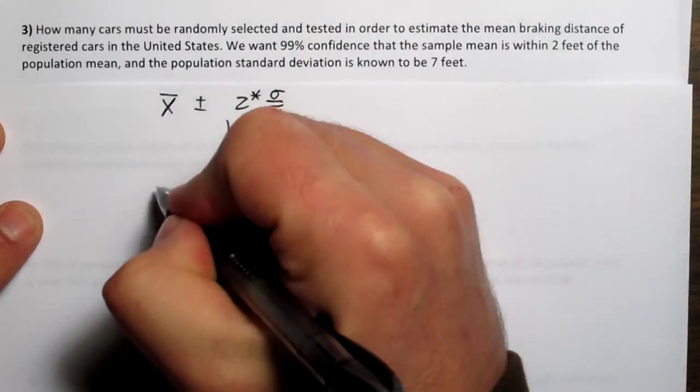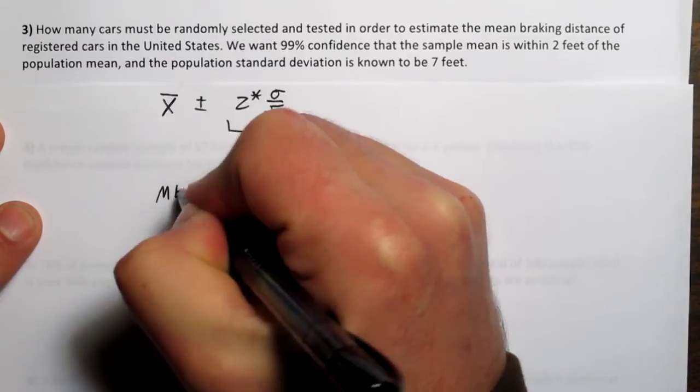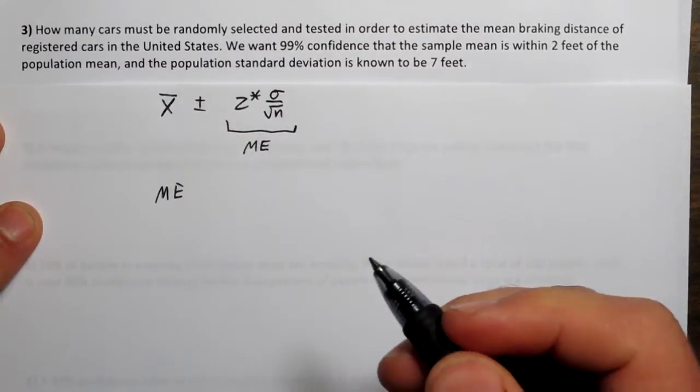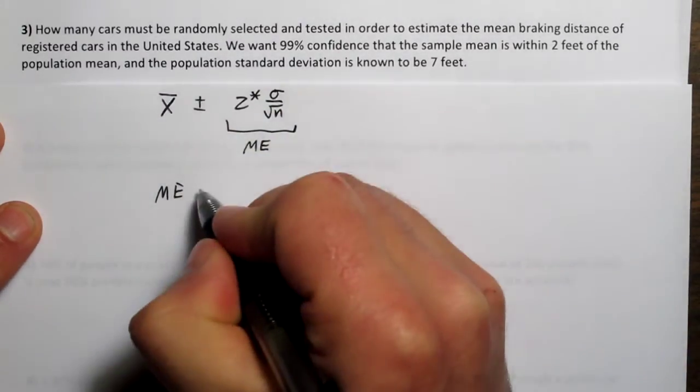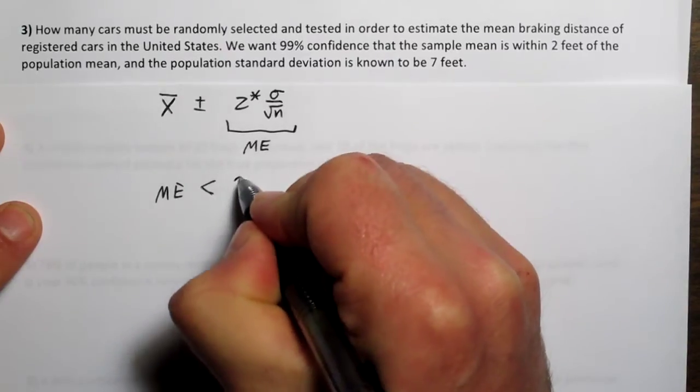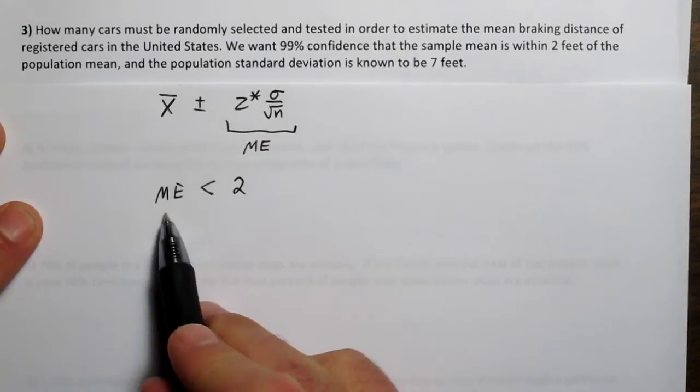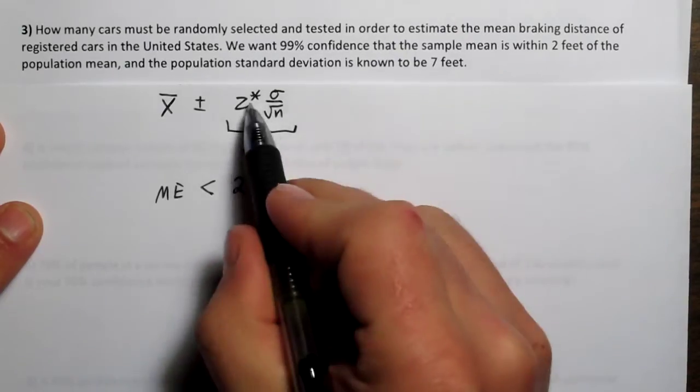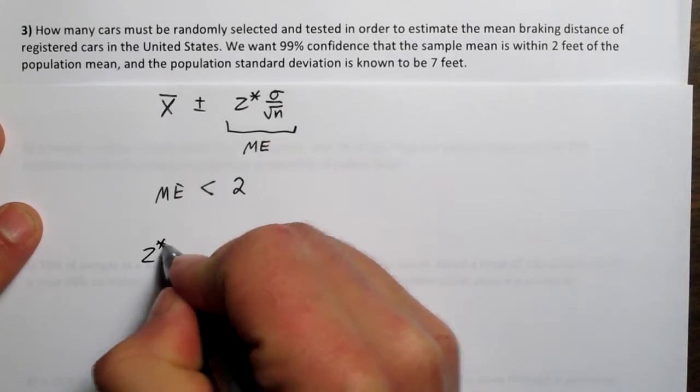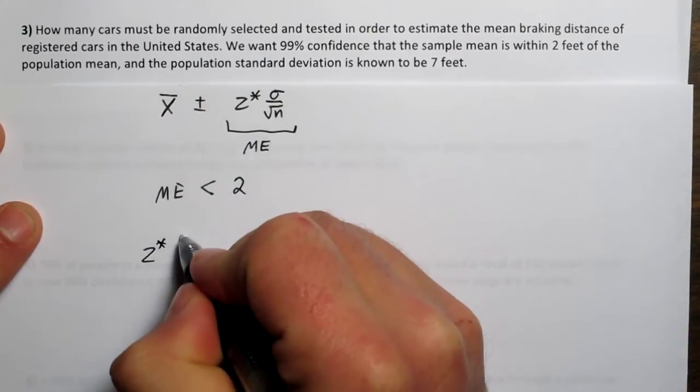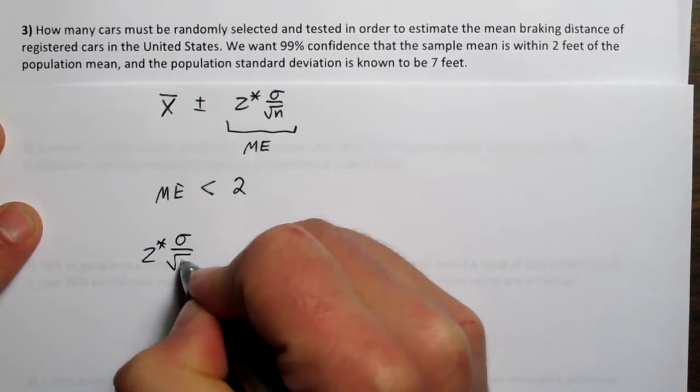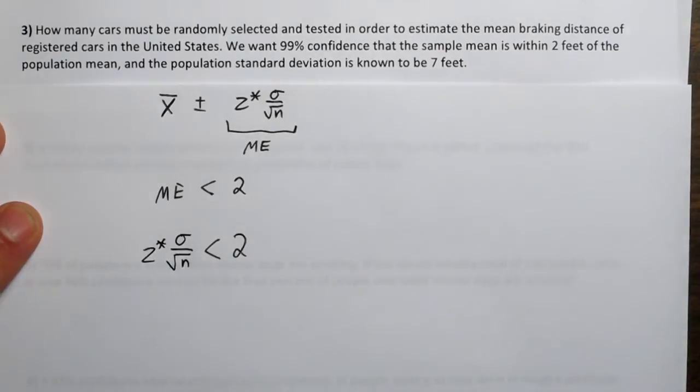So here's what we do. If this margin of error needs to be a maximum of 2 feet, we can say we want our margin of error to be less than 2 feet. Now let's plug in what we have for margin of error. Margin of error is the critical value z star times sigma over the square root of n. We want that to be less than 2 feet.